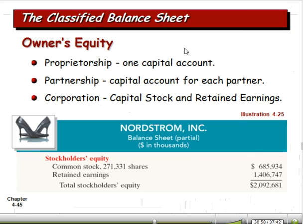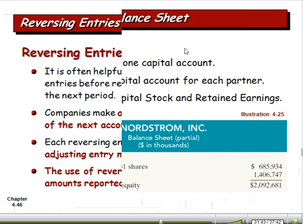Owner's equity: for a proprietorship there is one capital account with one owner. For a partnership, there are capital accounts for each partner. For corporations, we have capital stock and retained earnings. Nordstrom Inc. shows stockholders' equity with common stock of 271,331 shares worth $685,934,000, and retained earnings representing the accumulated earnings of Nordstrom.